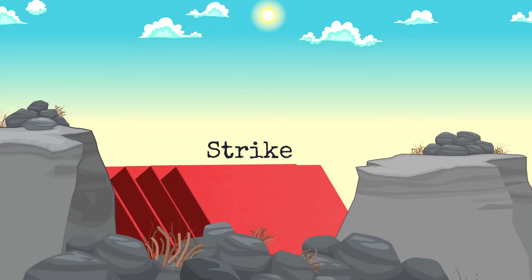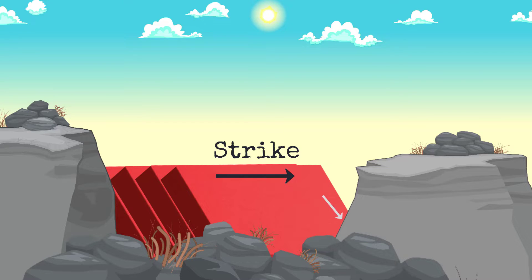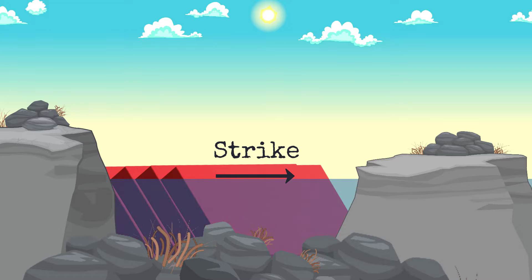Strike is the compass direction of a line on a bedding plane as that plane intersects with an imaginary horizontal surface. We use an imaginary horizontal surface because not all bedding planes intersect perfectly flat ground. Often the tilted bedding plane might intersect the ground partway up a mountain or might be covered over with sedimentary debris, meaning the geologist is not able to get an accurate strike.